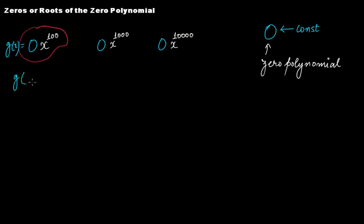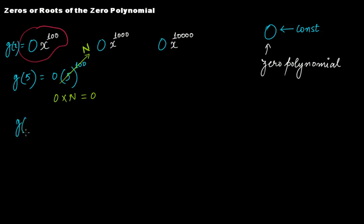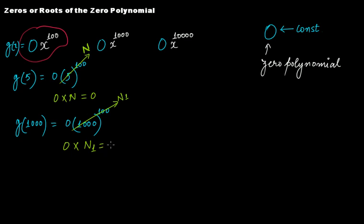If you put g(5), at the place of x you put five raised to the power of 100. This will have some value — let's say that number is n. Zero multiplied by n will be zero. If you take g(1000), at the place of x you put 1000 raised to the power of 100. Let's say you solve it and get the number as n1. Zero multiplied by n1 will again give you zero.